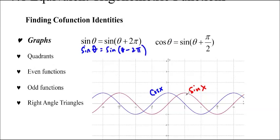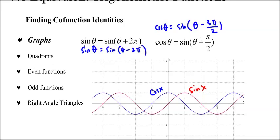Cos theta is equal to sine theta plus pi over 2. So if I take the red sine function and move it over to the left pi over 2, that becomes cos x. We could also say cos theta is equal to sine theta minus 3 pi over 2, because that's where it starts again at 3 pi over 2. Or sine theta is equal to cos theta minus pi over 2, or any of these variations — we just shift the graph back and forth to get different identities.